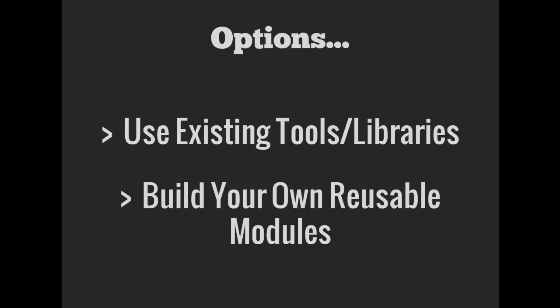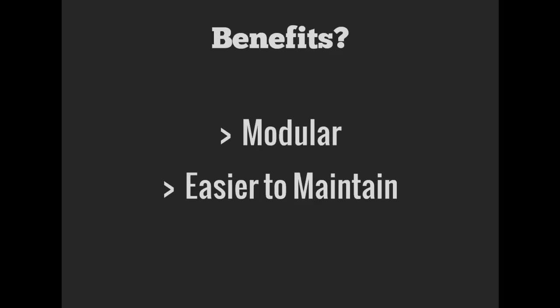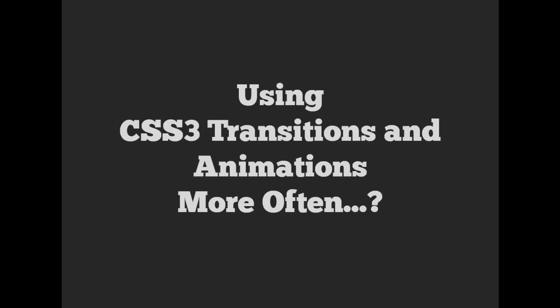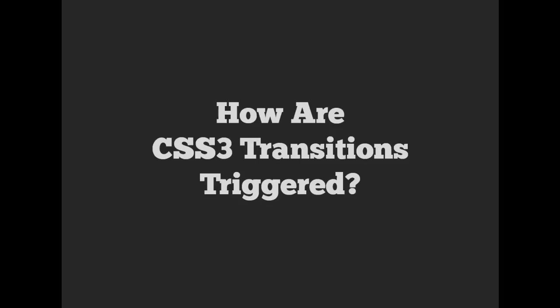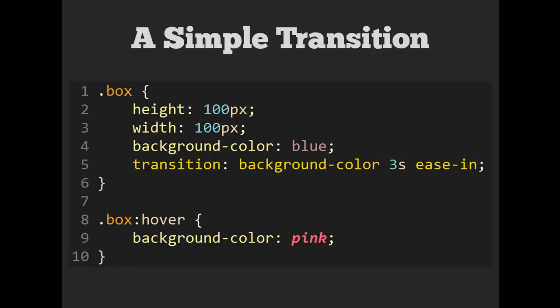You have the option to use existing tools and libraries like animate.css or build your own reusable modules. The benefits are that the code is modular and much easier to maintain when you keep your CSS out of your JavaScript. So if we're going to be using transitions and animations more often, it's good to learn the subtleties — the science behind animations and transitions in CSS. Let's look at how CSS3 transitions are triggered.